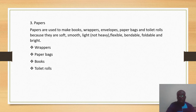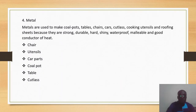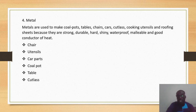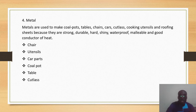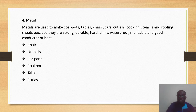Metals are used to make pots, tables, chairs, cars, cutlasses, utensils, and roofing sheets, because they are strong, durable, hard, shiny, malleable, waterproof, and good conductors of heat. We use metal in making things like chairs, cooking utensils, car parts, airplane parts, ship parts, pots, tables, and cutlasses.